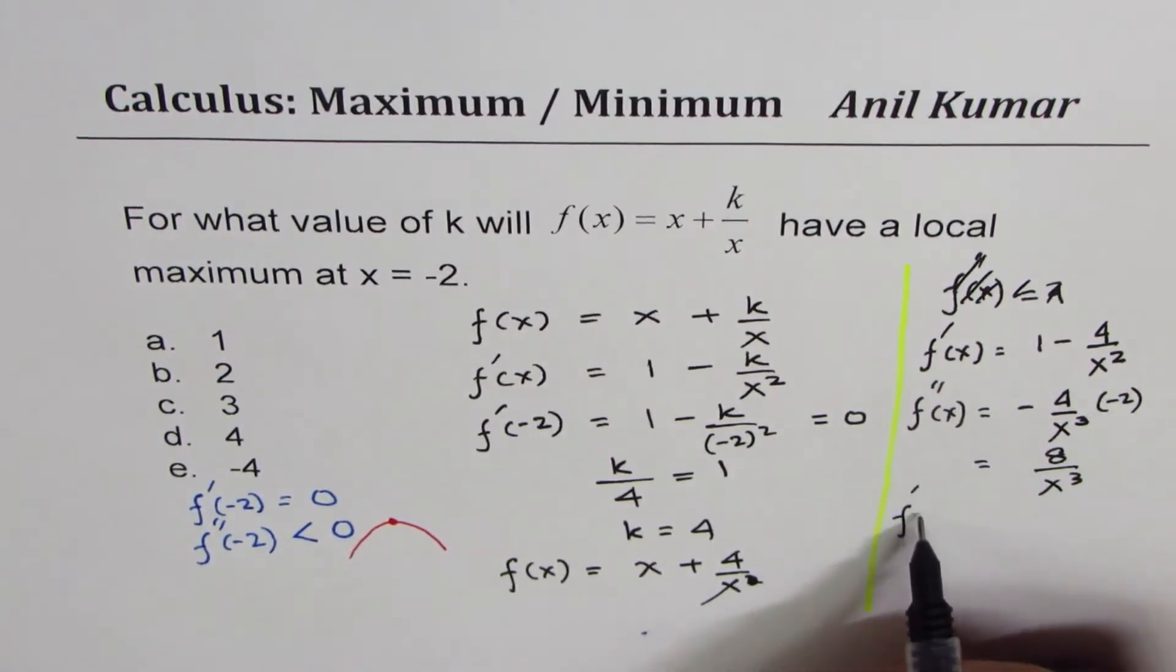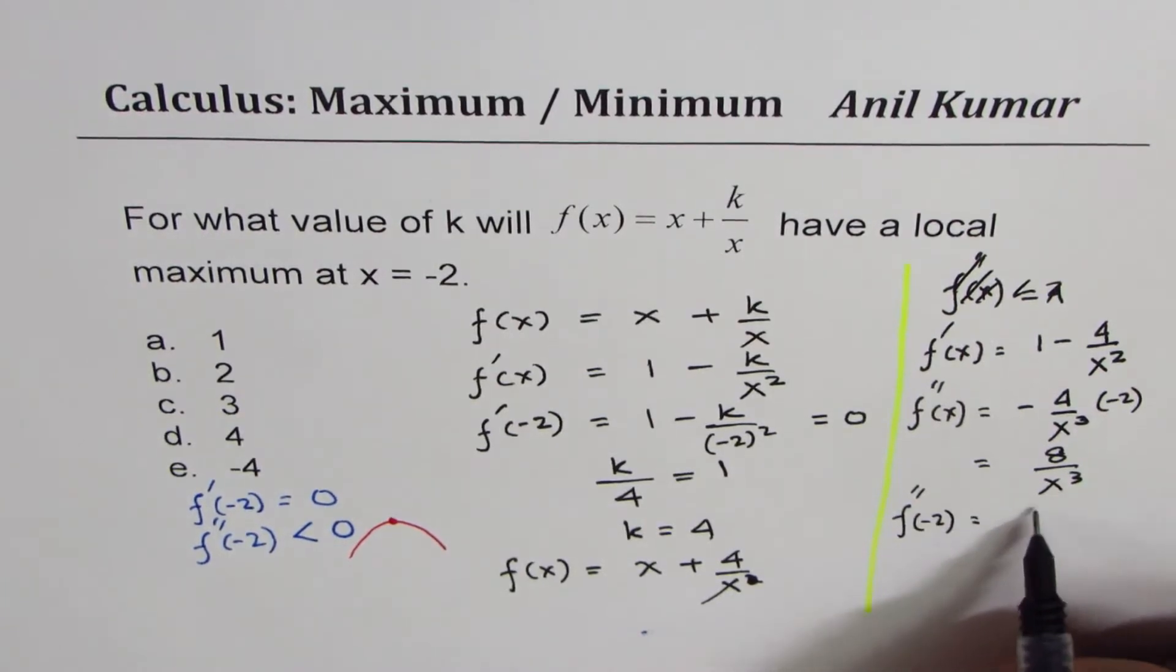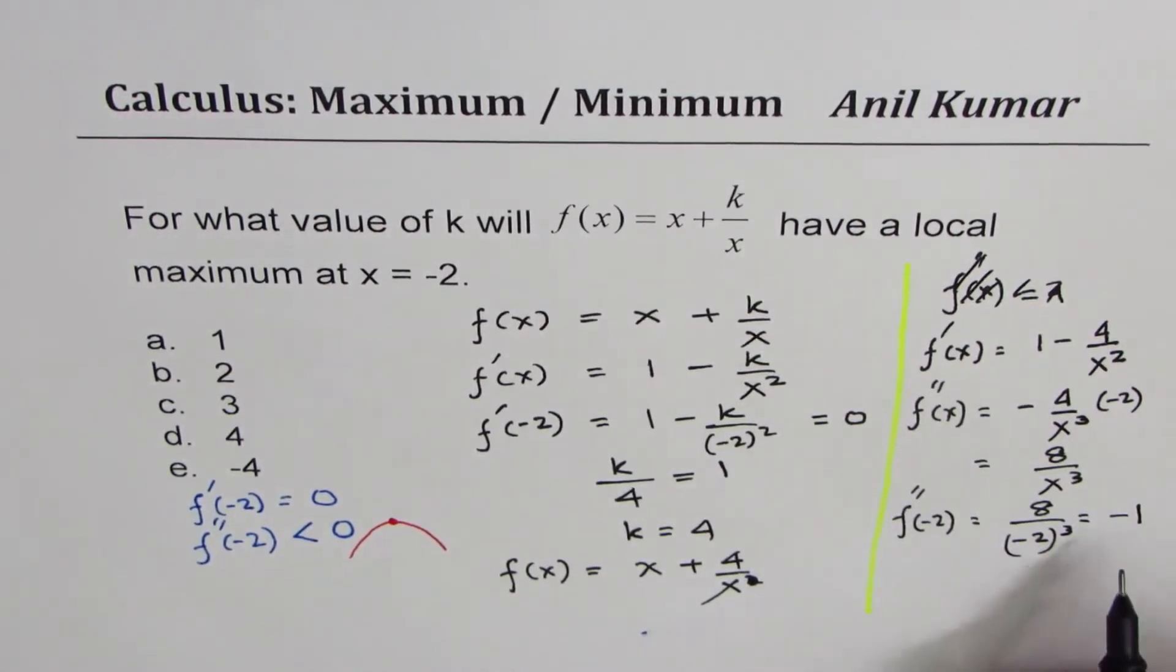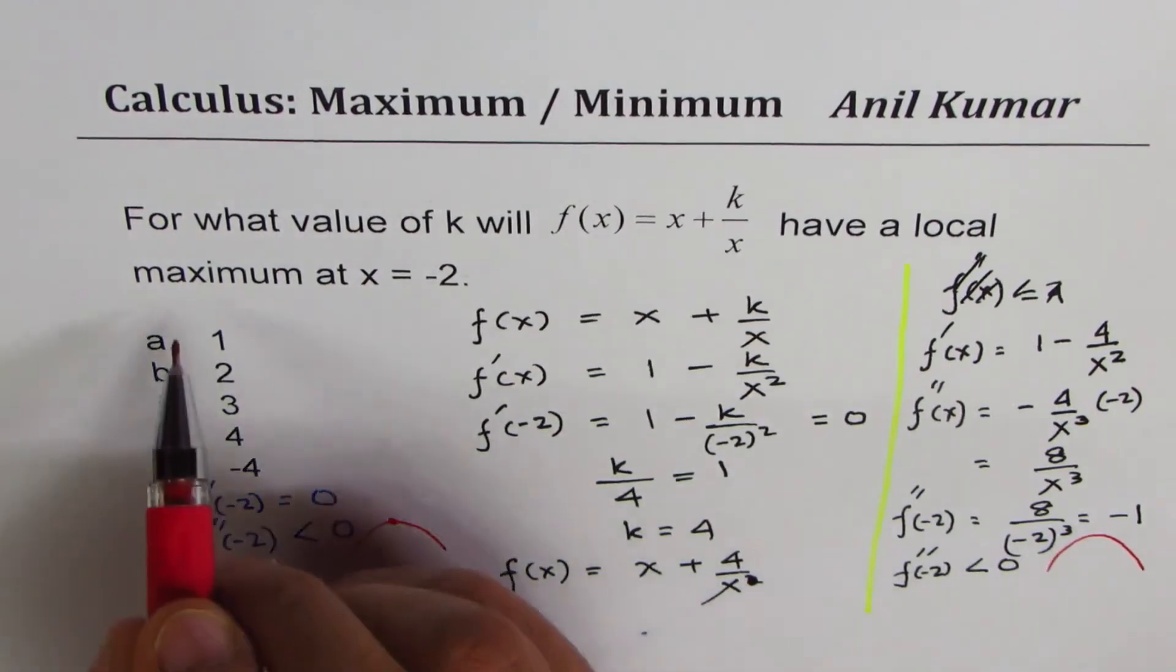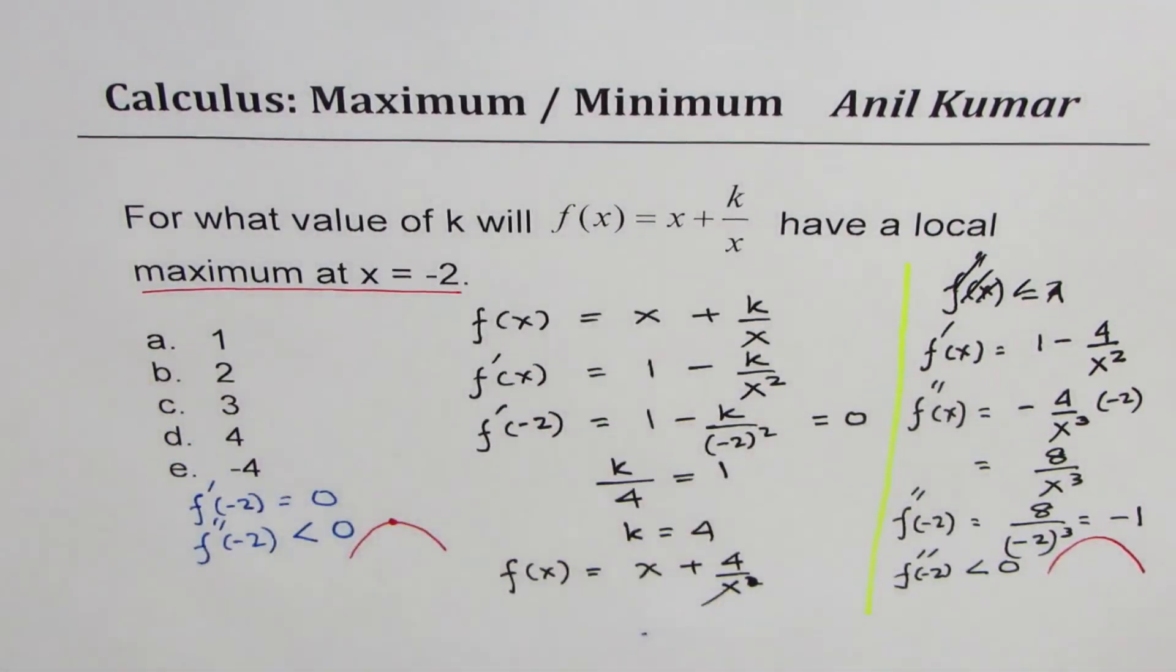So at x = -2, the second derivative will be how much? Replacing x³ by -2, we get 8/(-2)³, which is -8, so we get -1. Since this is less than 0, we find that f''(-2), the concavity is concave down, and therefore we do have a maximum at x = -2.